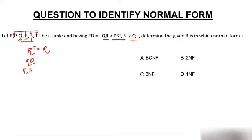The closure of RQ will have RQ. With the help of QR I can determine PST, and I already have Q, so with RQ I can determine all the attributes. So RQ is a candidate key. Now find the closure of RS. The closure of RS has RS; with S I can determine Q, giving me QR, and with QR I can determine PST. So with RS I can determine all attributes — RS is a candidate key.